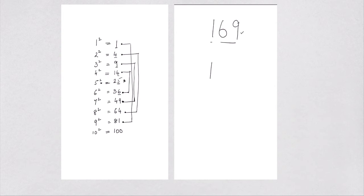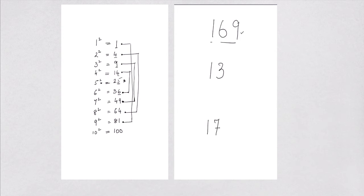The next thing we do is focus on the units and tens digits, which is 69. We go back to our squares and see if there is any number whose square ends in a 9. We have two candidates: 3 squared is 9, as well as 7 squared is 49. So we have the 3 and the 7. Combined with the 1 from before, our answer is either 13 or 17 — meaning either 13 squared is 169 or 17 squared is 169. So which one is the correct answer?